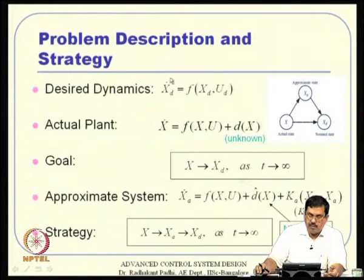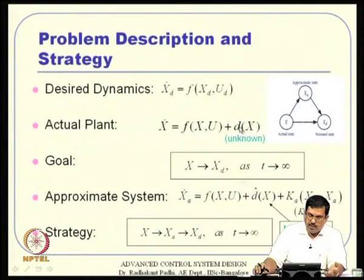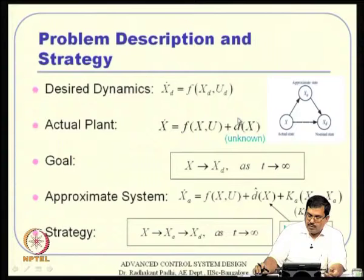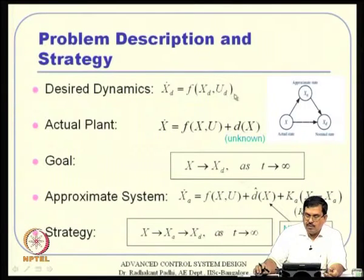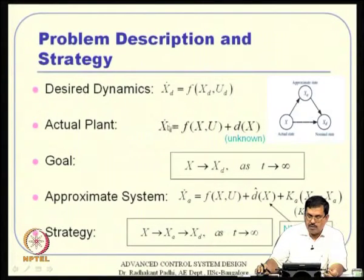However, this model does not represent the actual system exactly. The actual plant can have some uncertainty which we represent as d(x) — this stands for the unknown part, like disturbances. So the behavior of this system is going to be different from what we think it should behave based on the nominal control. Our objective is that the states x of the actual system should go to the states x_d of the desired system.